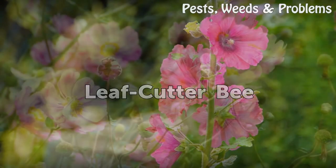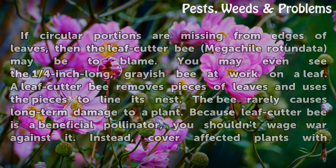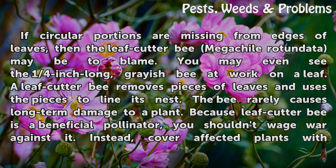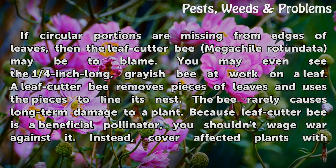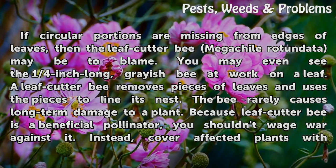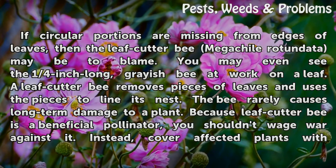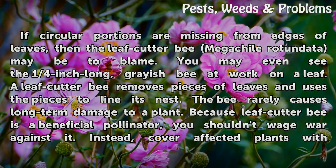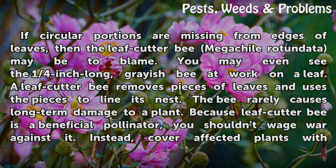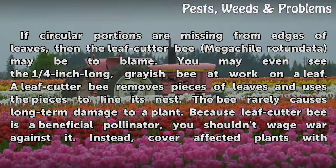Leaf Cutter Bee: If circular portions are missing from edges of leaves, then the Leaf Cutter Bee (Megachile rotundata) may be to blame. You may even see the one-quarter inch long, grayish bee at work on a leaf. A Leaf Cutter Bee removes pieces of leaves and uses the pieces to line its nest. The bee rarely causes long-term damage to a plant.